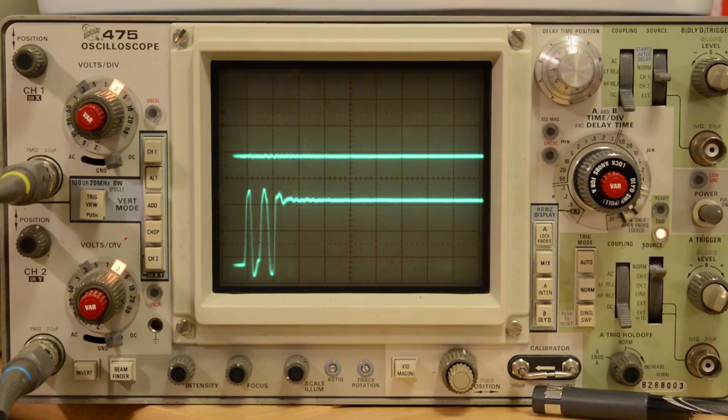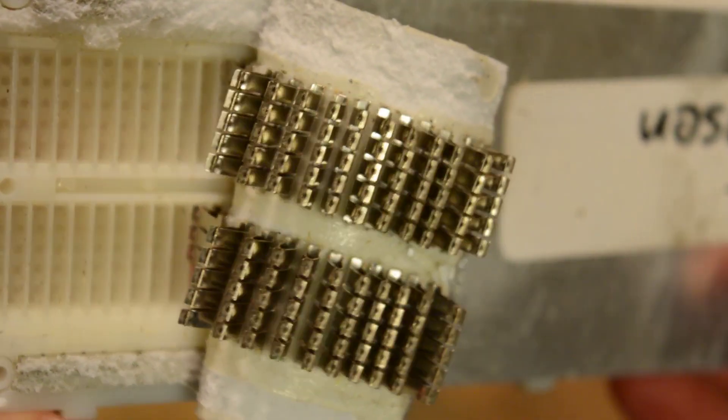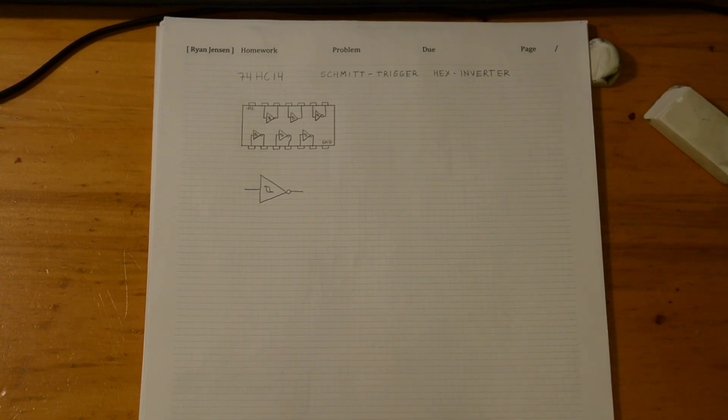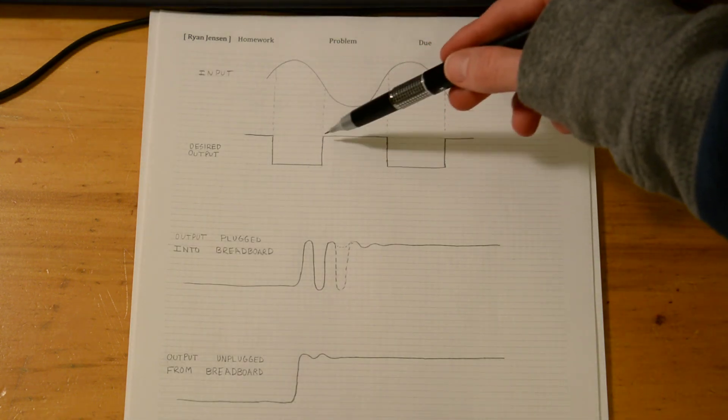In this video, I'll be demonstrating how a breadboard can affect a Schmidt trigger circuit. I used a 7414 logic chip which contains six inverters with Schmidt trigger inputs. I wanted to use a Schmidt trigger inverter to turn an arbitrary waveform into a clipped square wave.